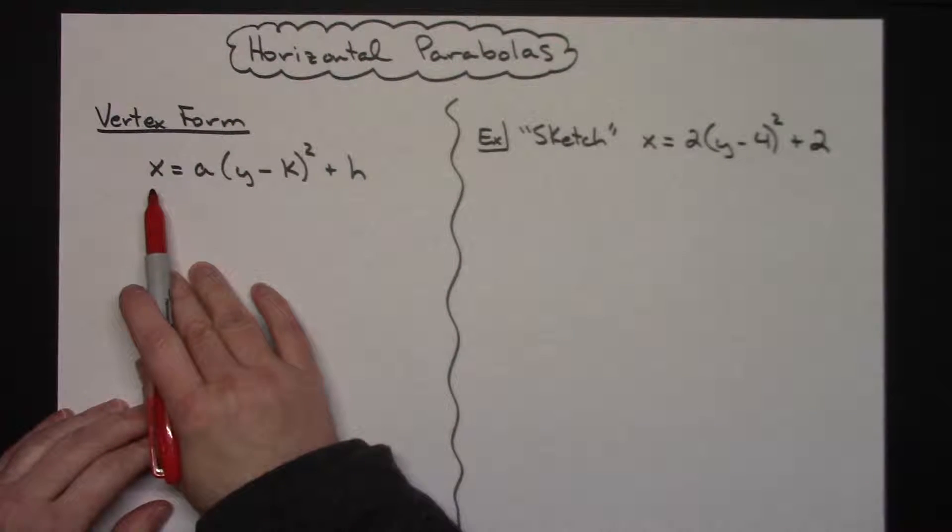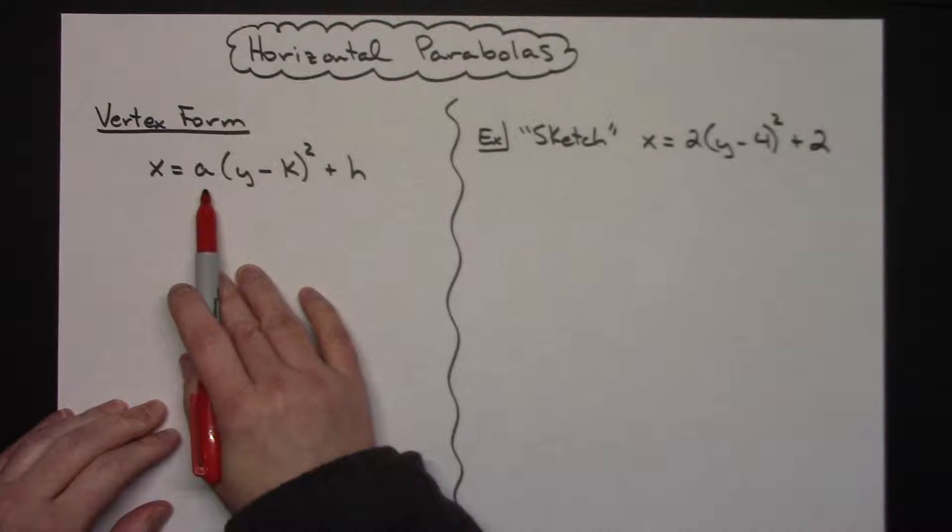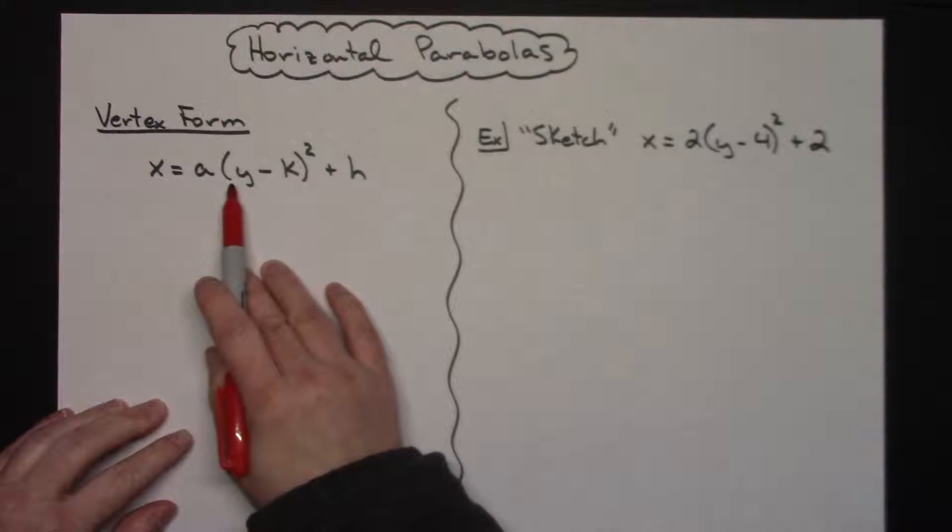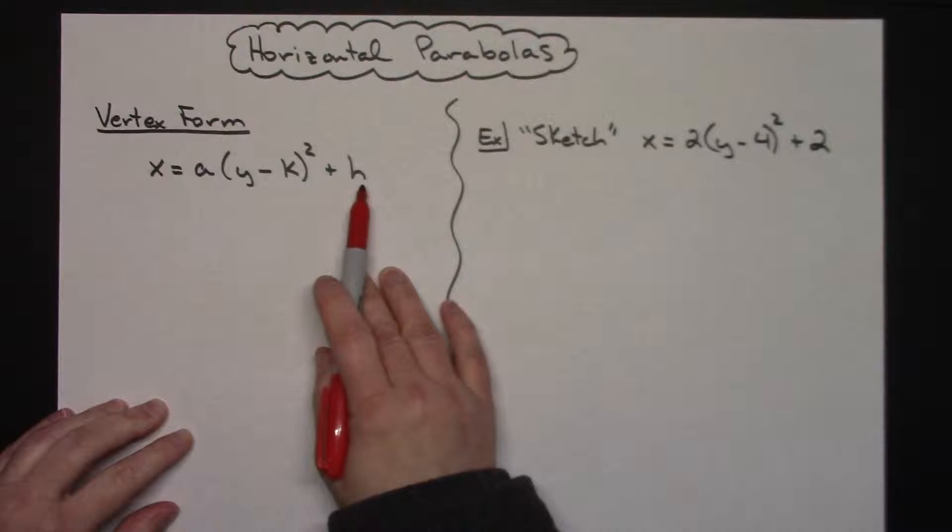In vertex form then, it's going to be x equals a, some random value out here, times the quantity of y minus k, quantity squared, plus your h.